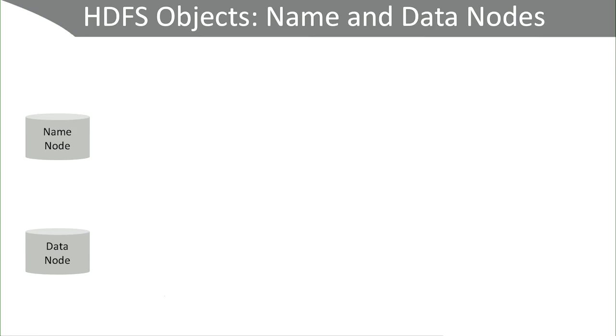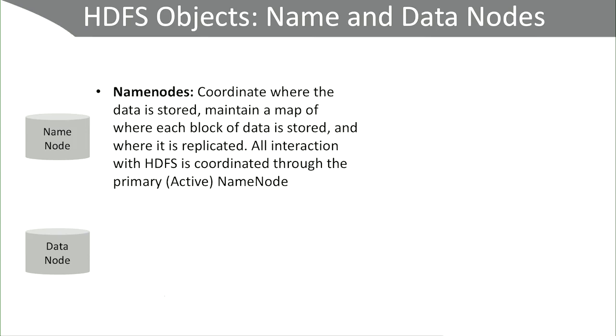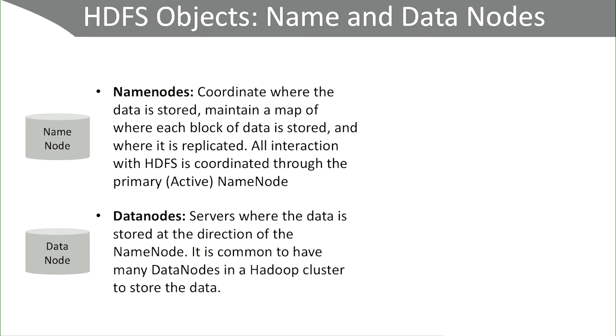In the Hadoop architecture there are two types of nodes: master and slave. On the master node you have something called the name node. The name node is really the master where data is orchestrated and sent down to the servers below. Name nodes are responsible for coordinating where data is stored — the name node itself doesn't store the data but figures out where that data needs to go. Below it is a collection of data nodes where the data actually gets stored and data blocks are written, all under the direction of the name node.